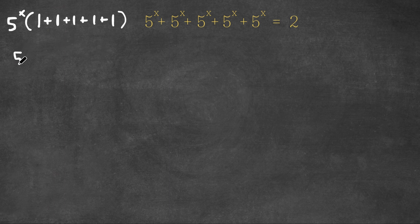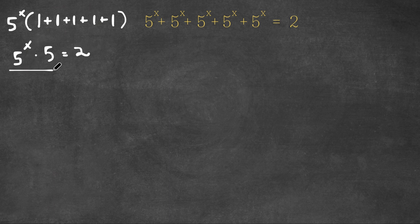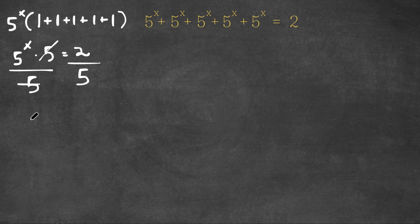So now we have 5 to the power of x times 5, and remember this is equal to 2. Now we want to isolate x, so I'm going to divide both sides by 5. These two cancel out on our left-hand side, so we have 5 to the power of x is equal to 2 over 5.